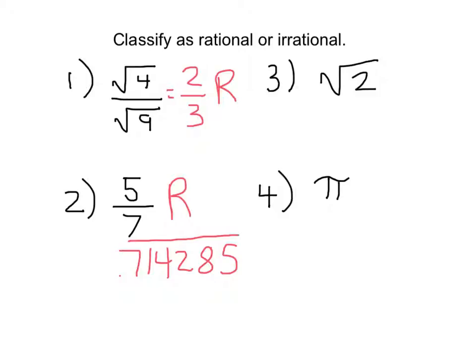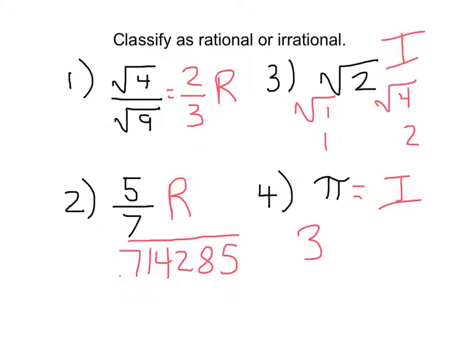Number three: square root of 2. Square root of 2 is between the square root of 1, which is 1, and the square root of 4, which is 2 — so this is going to be between 1 and 2. Square root of 2 is a non-terminating, non-repeating decimal, so this is irrational. And finally, pi. Pi is an example of an irrational number — it's a non-terminating, non-repeating decimal. When you use 3.14 for pi, you're using an approximate value, not the exact value. Because it's impossible to actually get the exact value of an irrational number — they're crazy and insane. Thank you for listening, and we'll see you tomorrow.